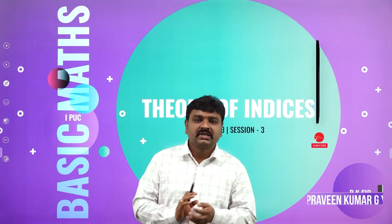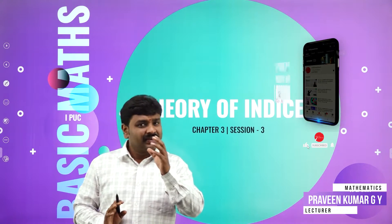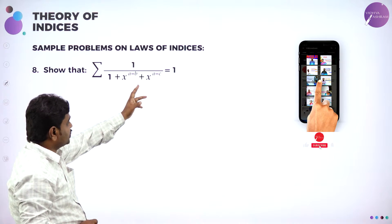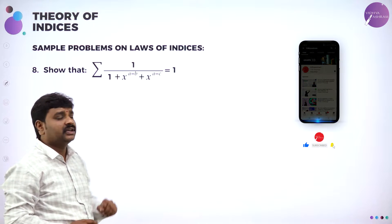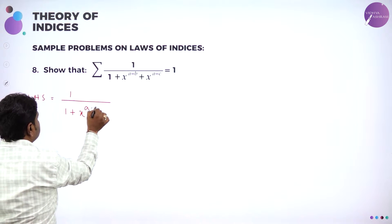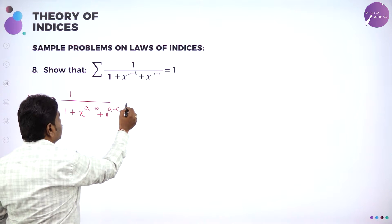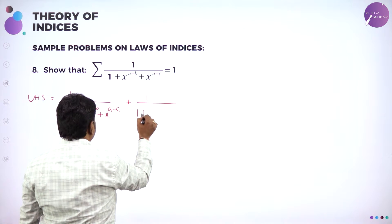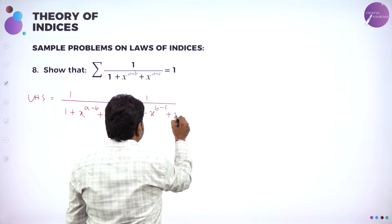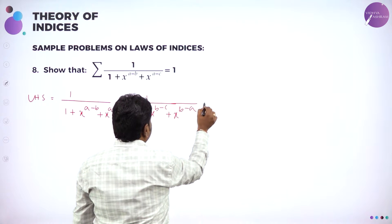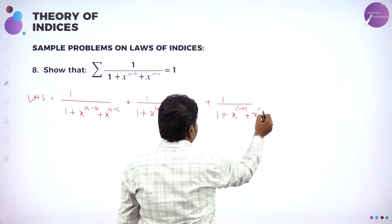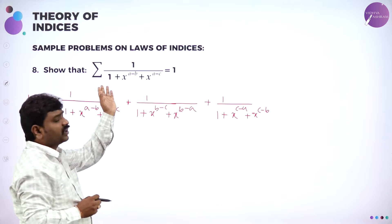Welcome to the session dear students. Now we will continue with problems based on law of indices. Show that sigma 1 by (1 + x power A minus B) plus x power A minus C equals 1. Sigma means summation — cyclic summation. So we will take LHS.